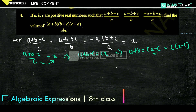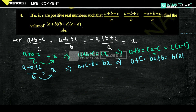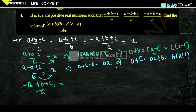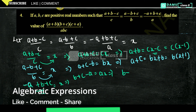Then for (a minus b plus c) divided by b equals x, we get a plus c minus b equals bx, so a plus c equals bx plus b, which gives a plus c equals b times (x plus 1). Similarly, for (minus a plus b plus c) divided by a equals x, we get b plus c minus a equals ax, so b plus c equals ax plus a, which gives b plus c equals a times (x plus 1).